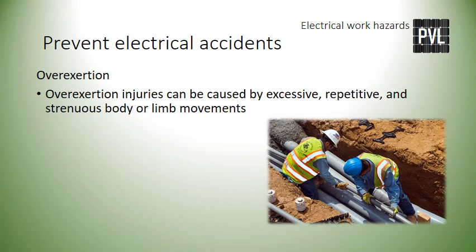Over-exertion is the most reported injury in the workplace, per the National Safety Council 2019. Over-exertion injuries can be caused by excessive, repetitive, and strenuous body or limb movements — back, neck, joints, wrist, and shoulder injuries are common. Limiting excessive, repetitive, and strenuous movements may be the best way to prevent over-exertion injuries. Body conditioning such as stretching and warming up helps minimize their occurrence. Rest, recovery breaks, good hydration, and nutrition also minimize or prevent over-exertion injuries.